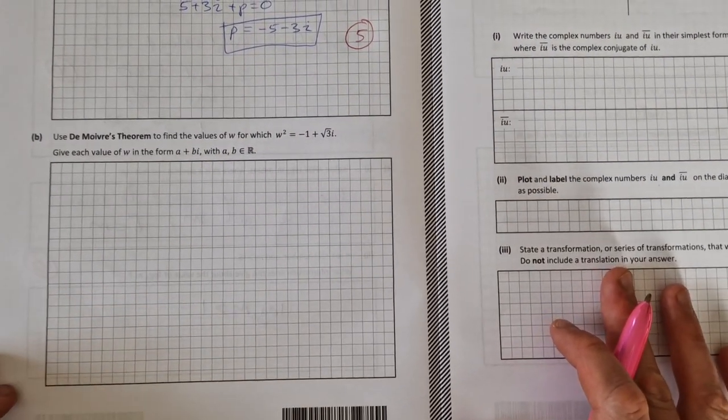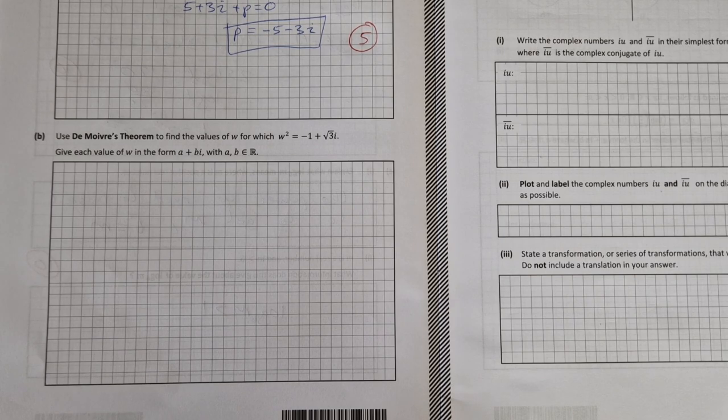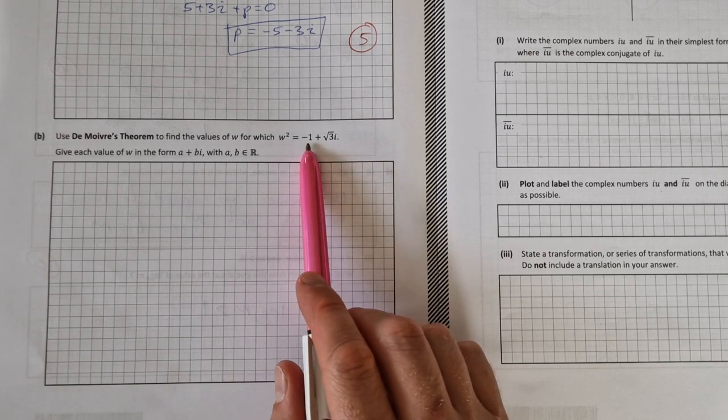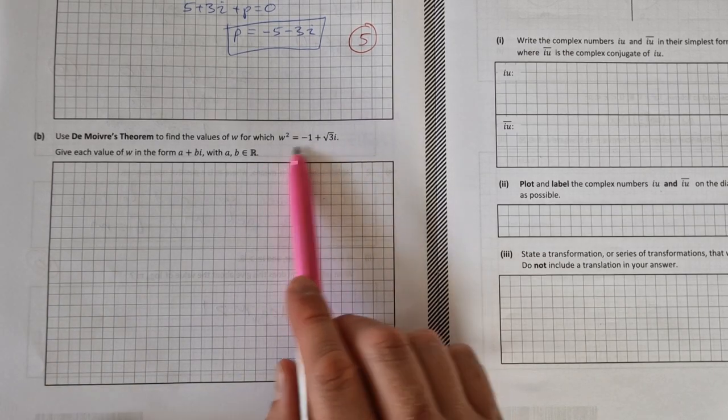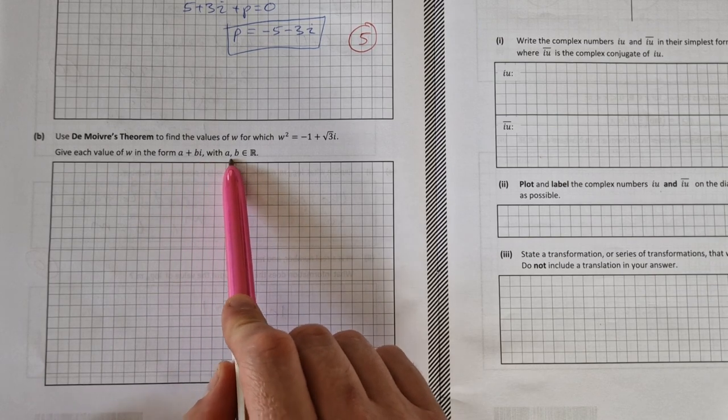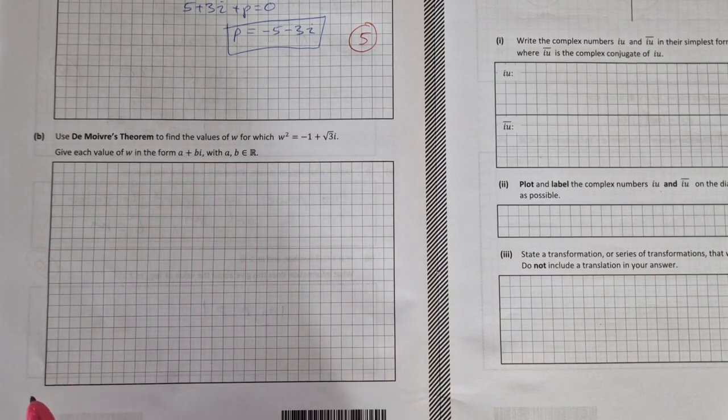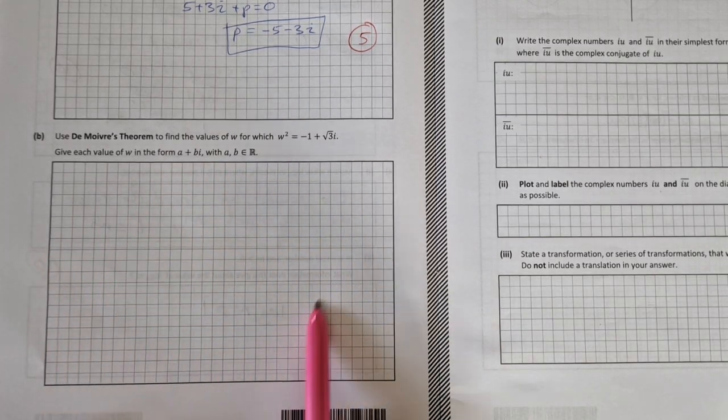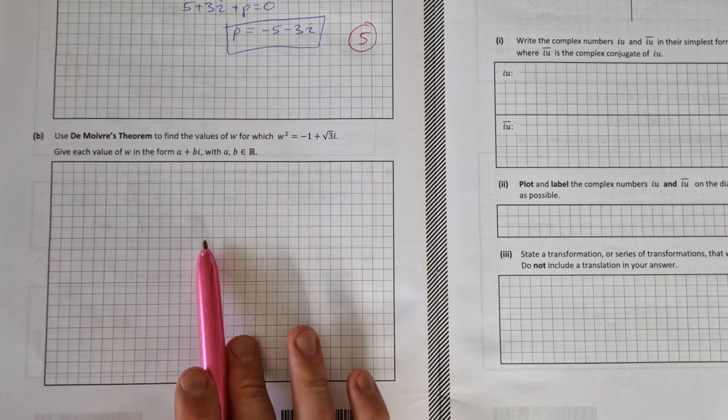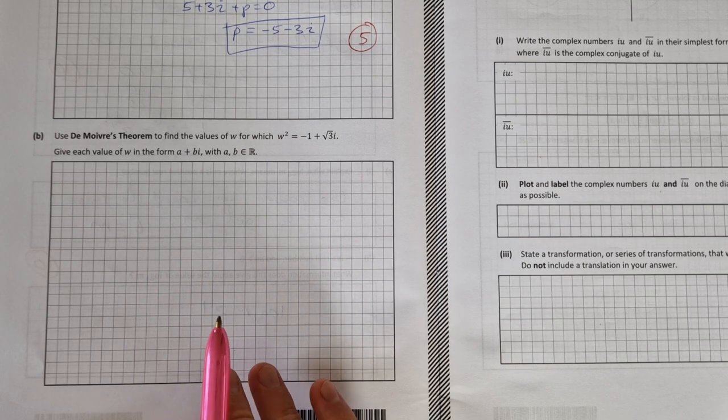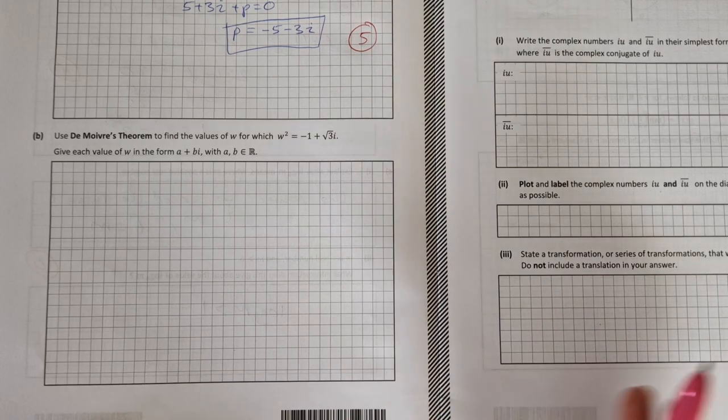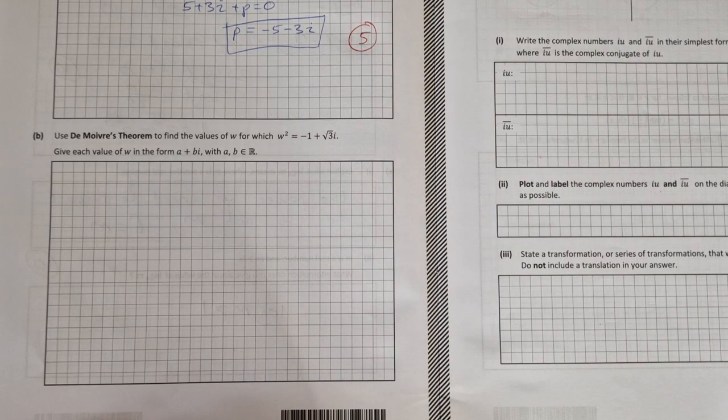Part b we're asked to use De Moivre's theorem to find the values for omega for which omega squared equals minus 1 plus root 3 i. Give each value of omega in the form a plus bi with a and b an element of R. Now you don't have a lot of room to do this question here. If you struggled to fit it in here, there is space at the end of the exam to do that.